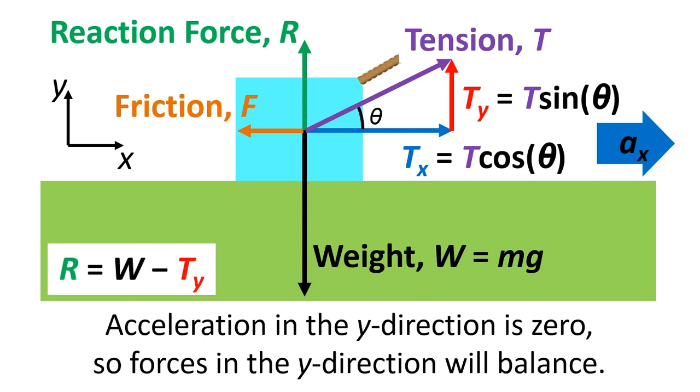Now we can rearrange that so that R equals W minus Ty. And instead of writing W we can write mg. And instead of writing Ty we can substitute in T sin theta. So now we've got a useful equation that we can use later on.